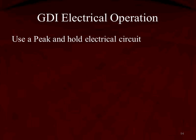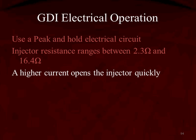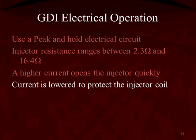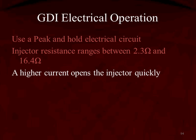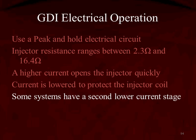The GDI injector uses a peak and hold electrical circuit. The injector resistance is going to range between 2.3 and 16.4 ohms depending on the manufacturer and how they design each circuit. The higher current is used to open the injector quickly, then the current is lowered to protect the injector coil. In the peak section, the higher current opens the injector very quickly; then in the hold section, the current is lowered by the computer so that the injector coil does not overheat.